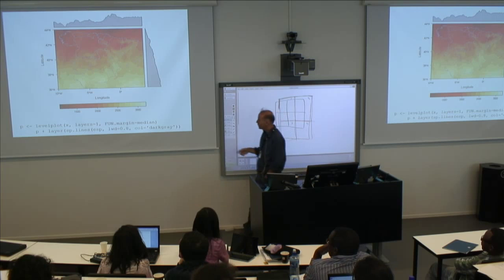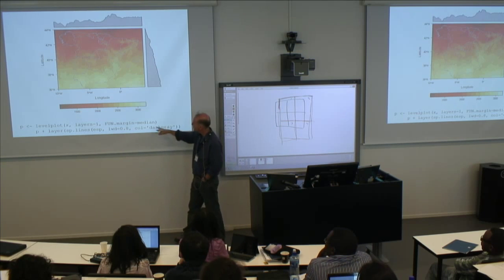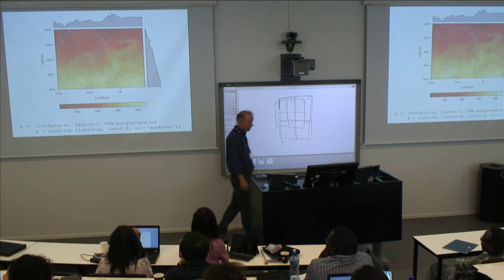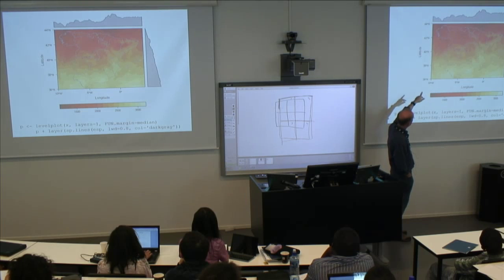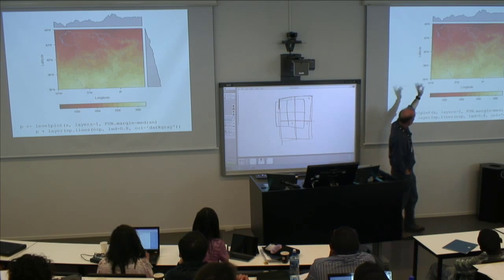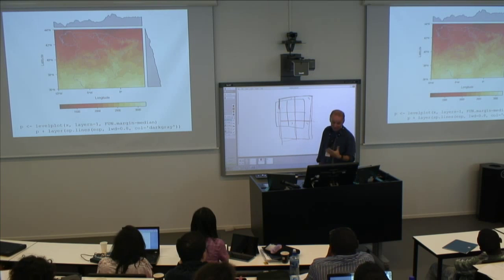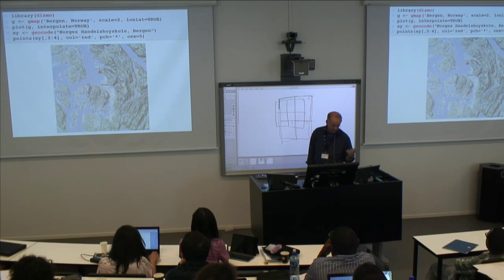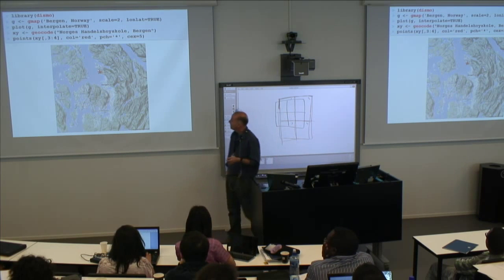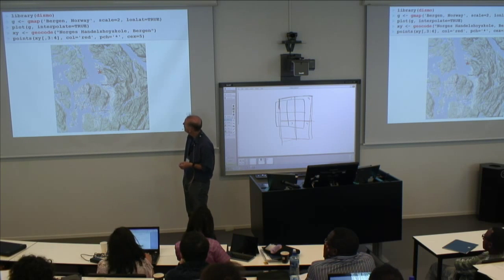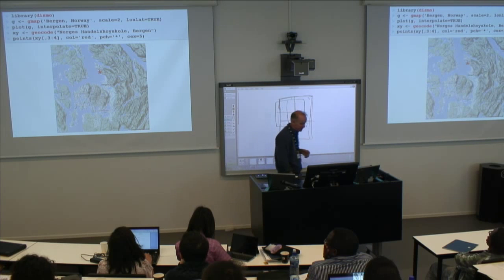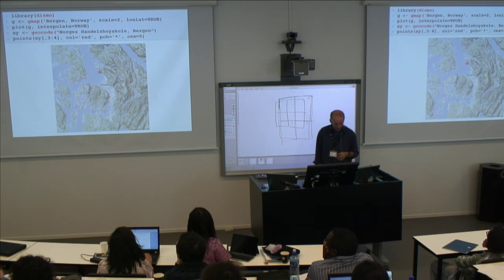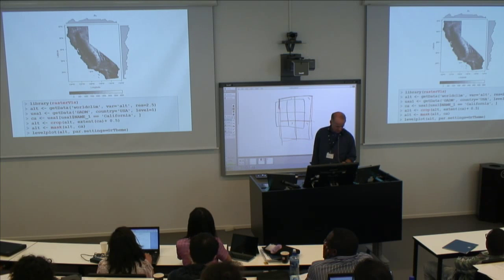This is one example from Oscar Perpinan — the rasterVis package, which Rosé referred to. Here's solar radiation in Spain; you see the values, latitude, longitude, and a profile. You can do all these fancy things that are actually very hard to do in GIS typically. Or something fun — four lines to make a little map using the dismo package. There are a couple of different packages that deal with the Google APIs. That was my intro to raster, and now I go to my hands-on demo.